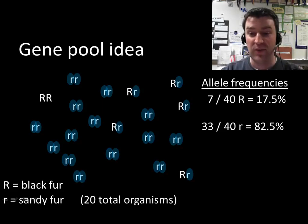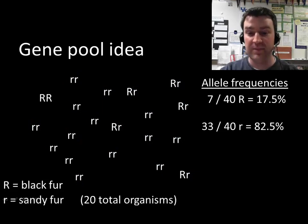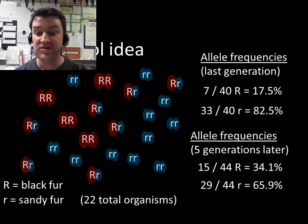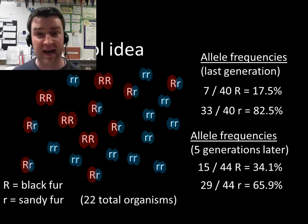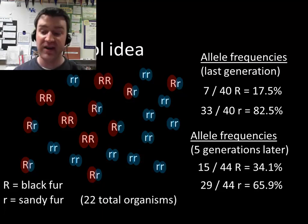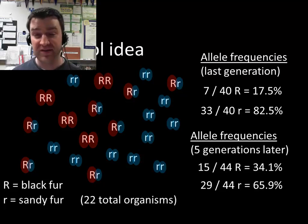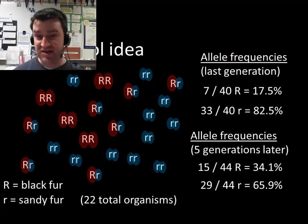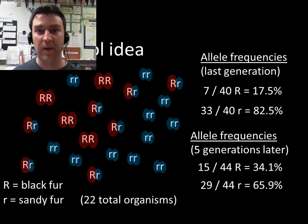If we come back to this population five generations later, we could count the dominant alleles again. Maybe now 34% of the alleles are dominant and 65% are recessive. That's quite a shift from five generations ago, and we would simply call that shift evolution. This population seems to be shifting more towards the black color fur allele in the overall population.